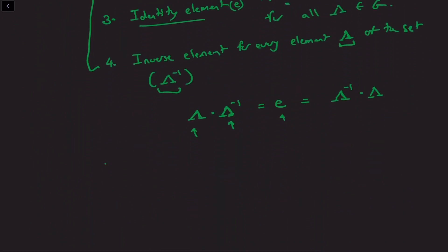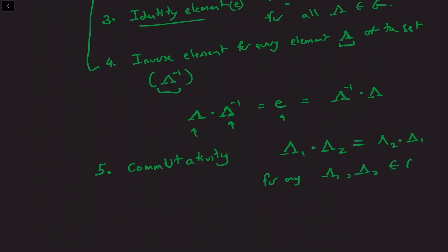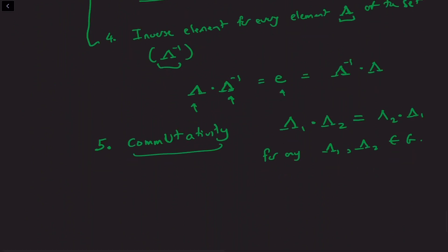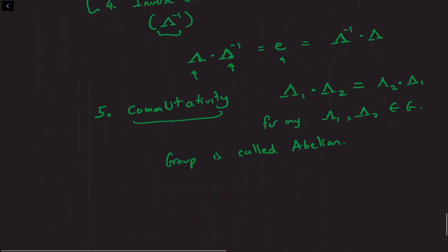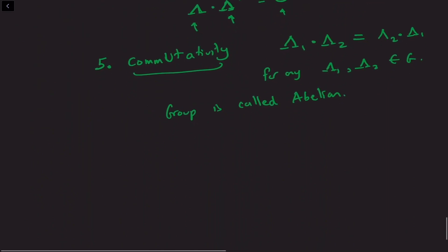There is an additional property that some groups satisfy but not all, which is commutativity. That is, if lambda 1 composed with lambda 2 is the same as lambda 2 composed with lambda 1 for any lambda 1, lambda 2 belonging to G, then the group is said to be commutative, and the group is called Abelian.